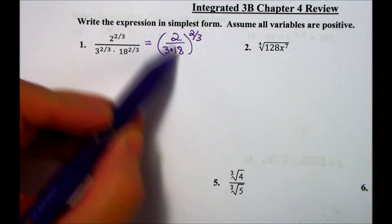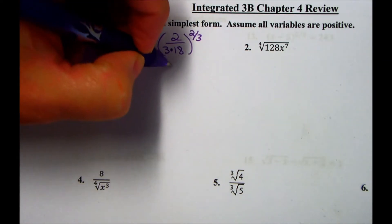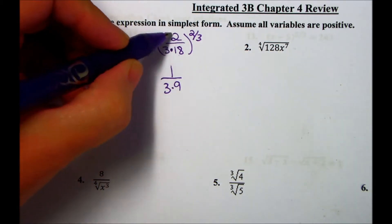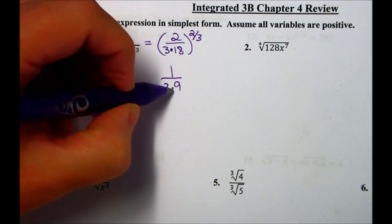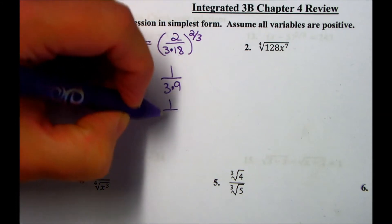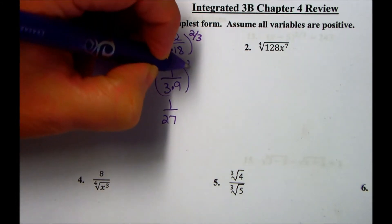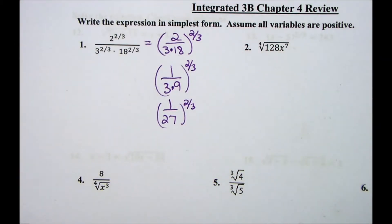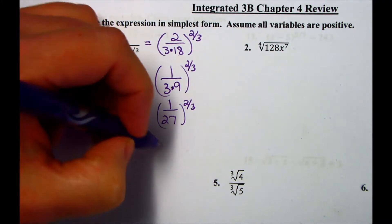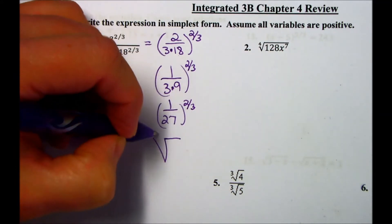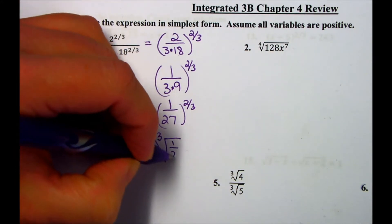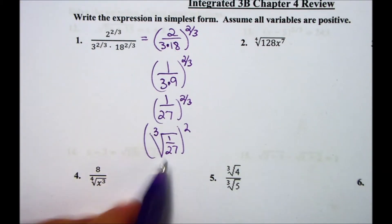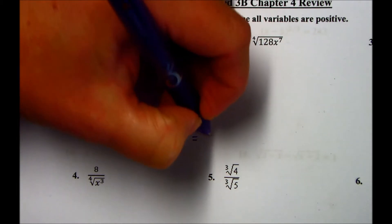The 2 and the 18 — I can divide both by 2, which gives me 1/3 times 9. Then I can multiply 3 and 9 together, which gives me 1/27. But all of this is still being taken to the 2/3 power. Now we can rewrite our exponent as a radical: the 3 is our root, and the 2 is our power. So the cubed root of 1/27 is 1/3.